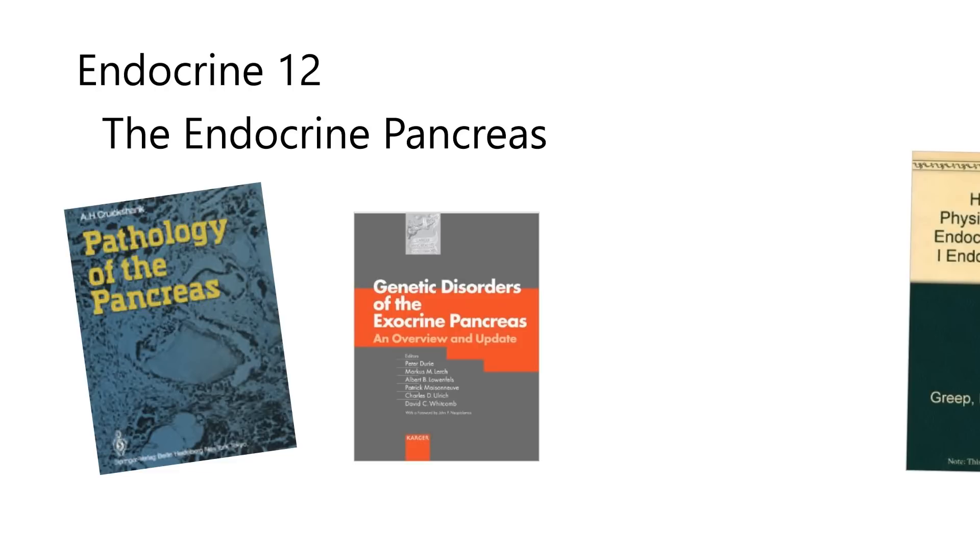Exocrine. If you forgot what that means, that means some solution is going to come out of a duct, D-U-C-T. Like sweat comes out of a duct. So sweat is an exocrine secretion. The pancreas makes pancreatic juice that comes out of a duct, and it gets dumped into the lumen of the small intestine.